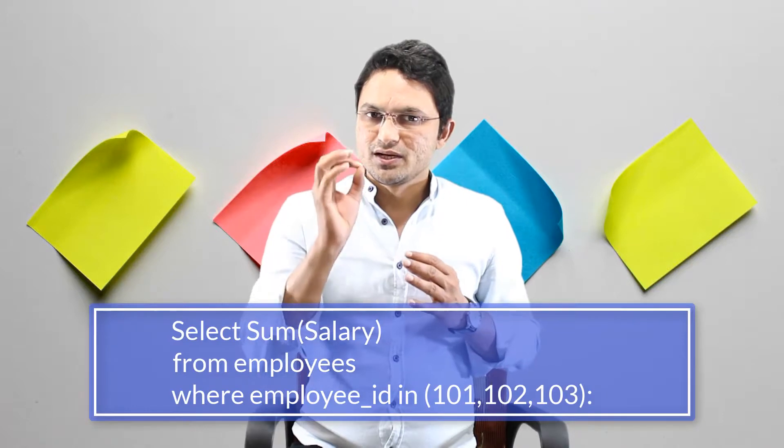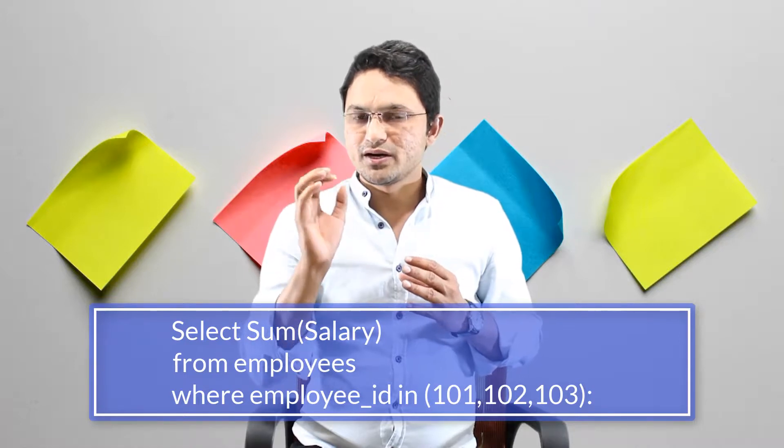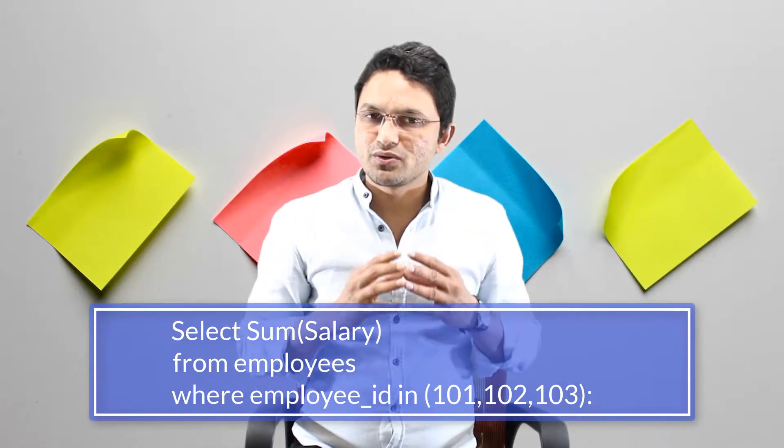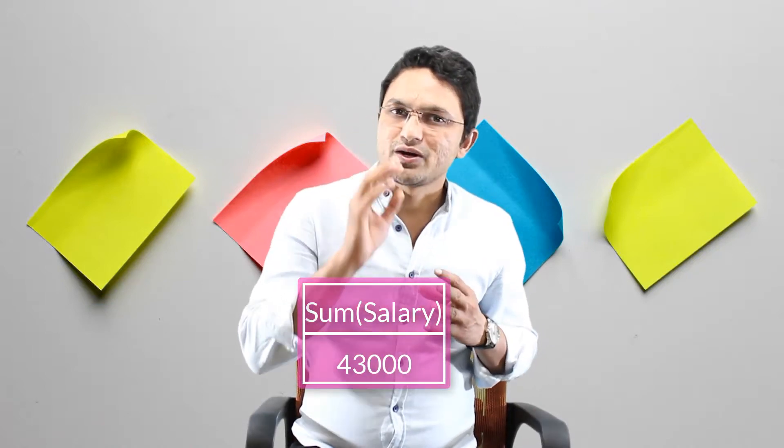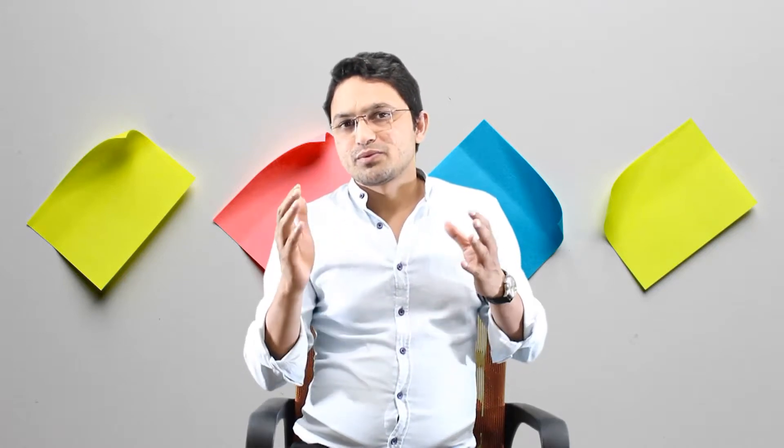For example, if you write SELECT SUM(salary) FROM employee WHERE employee_id IN (101, 102, 103), the output will be the sum of all the salaries returned by the SELECT query. The SUM function sums all the values provided in the rows for the column specified in the brackets. If you're still confused, watch the practical demonstration.